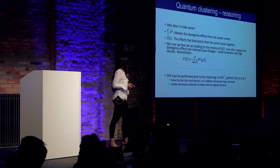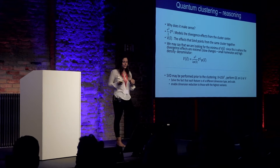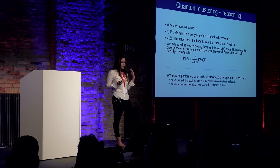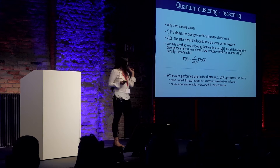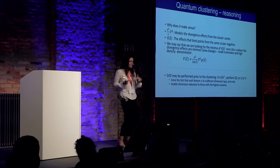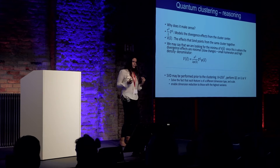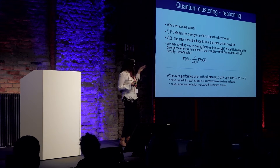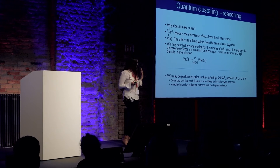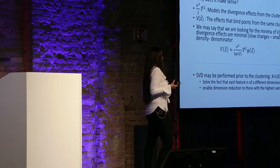So why does it make sense? The Laplacian models the divergence effect from the cluster center — noise, outliers, everything comes into that term — while the potential models the effect that binds points together from the same cluster. Mathematically, it also makes sense: when looking for the minima of the potential, we are looking for places where the second derivative — the Laplacian — is small, meaning small changes in the density function, and where the function itself is high. This is exactly the definition of stability or attraction.